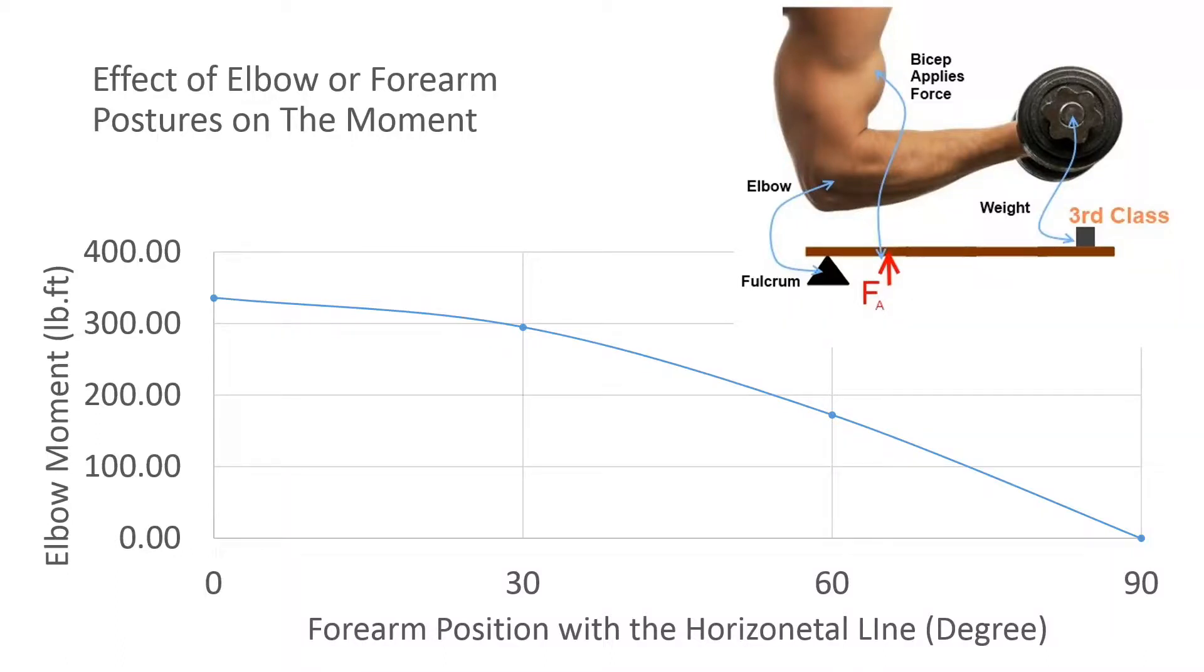In the earlier video I showed you how much muscle force is needed to carry only about 22 pounds of load in that posture. If you place your elbow at 90 degrees, you need about 168 pounds of muscle force just to carry that 22 pounds in this posture because of the third class mechanical lever.